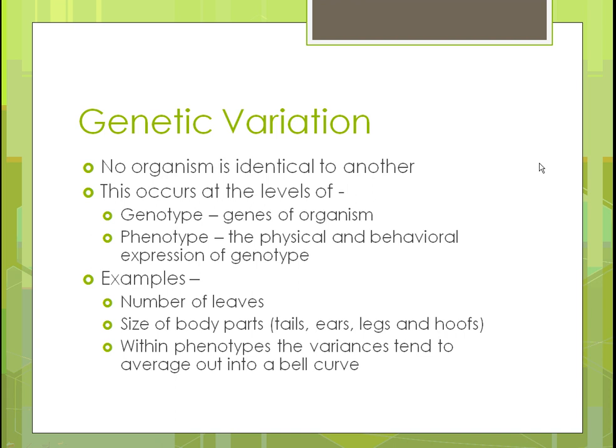Genetic variation is what helps drive natural selection and the changes that happen. No two organisms are identical to one another — just like humans, we're all different. This variation happens at two levels: the genotype, which are the genes of the organism, and the phenotype, which is the physical and behavioral expression of that genotype. Examples of variation in everyday life include the number of leaves on a tree — even two oak trees planted at the same time won't have the same number of leaves.